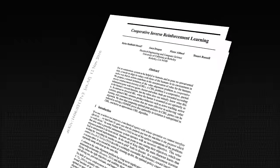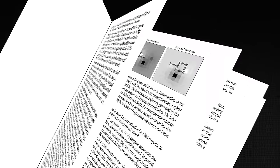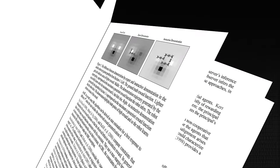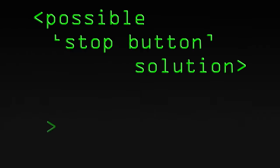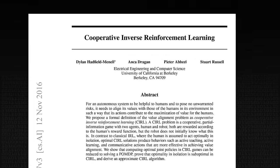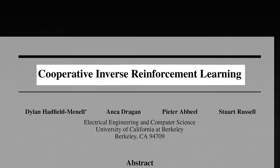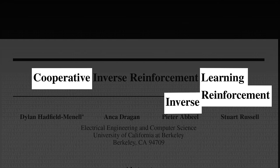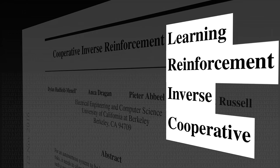There have been some really interesting things proposed as possible solutions or approaches, and I wanted to talk about cooperative inverse reinforcement learning. I thought the easiest way to explain it is to build it up backwards.